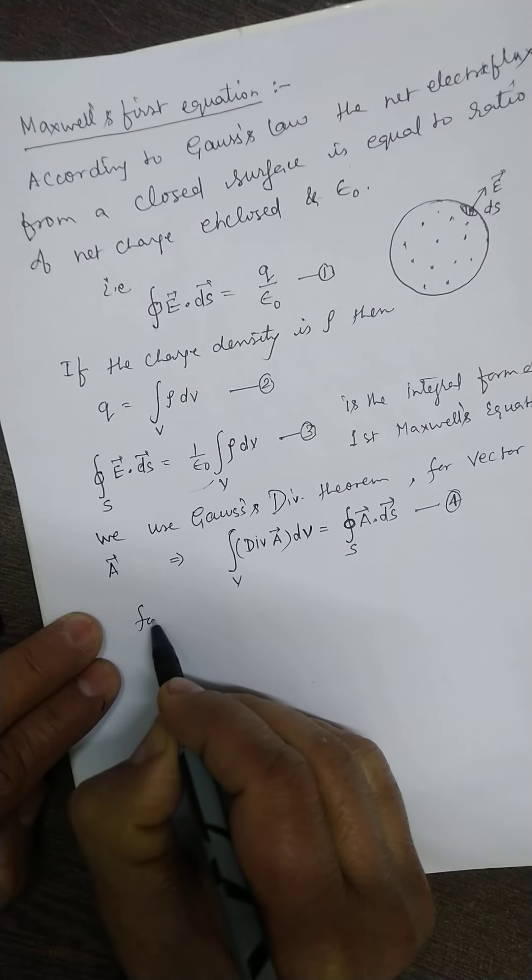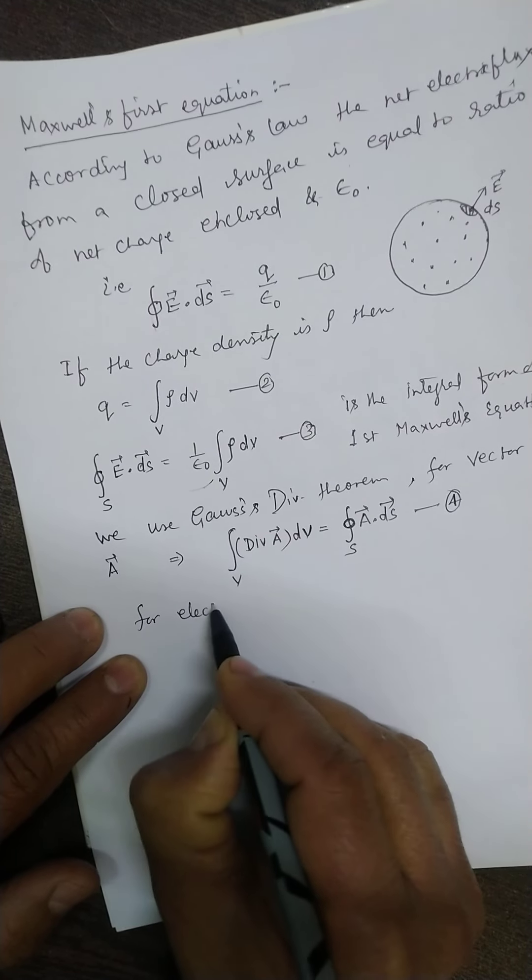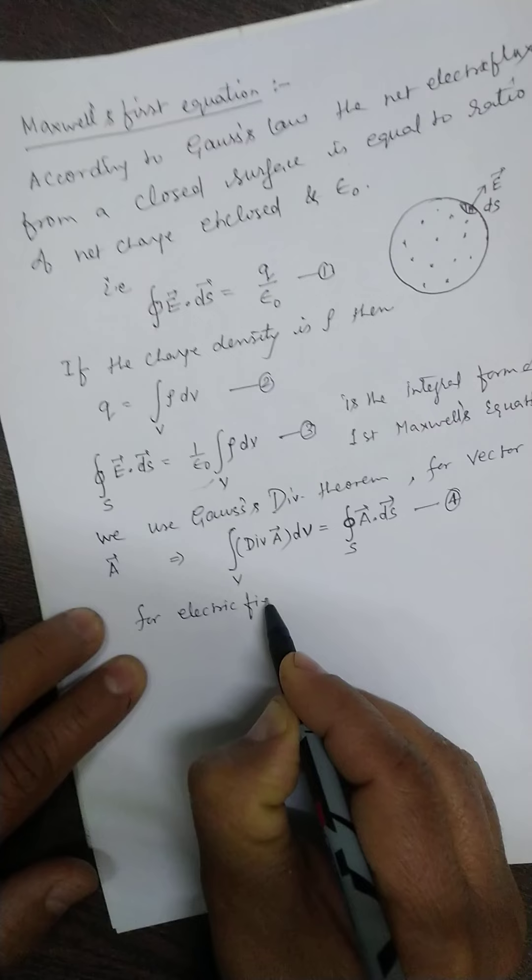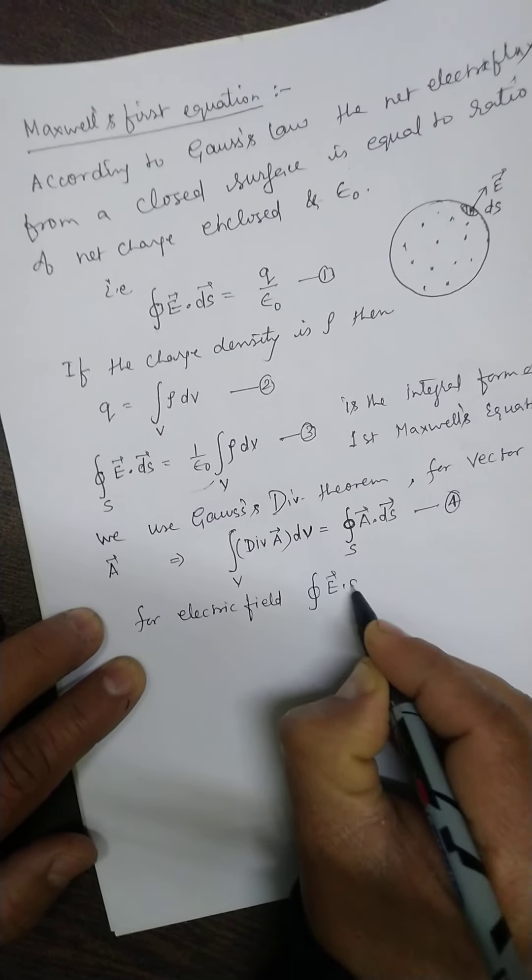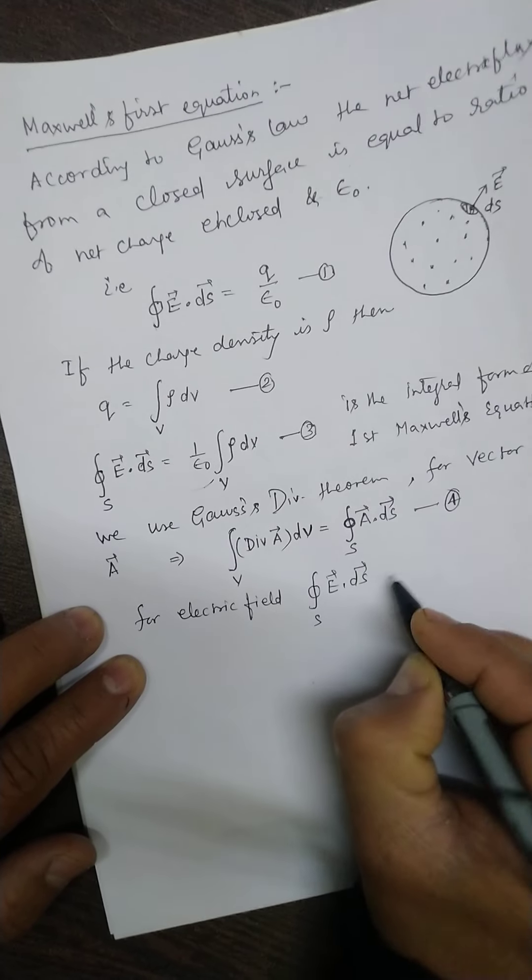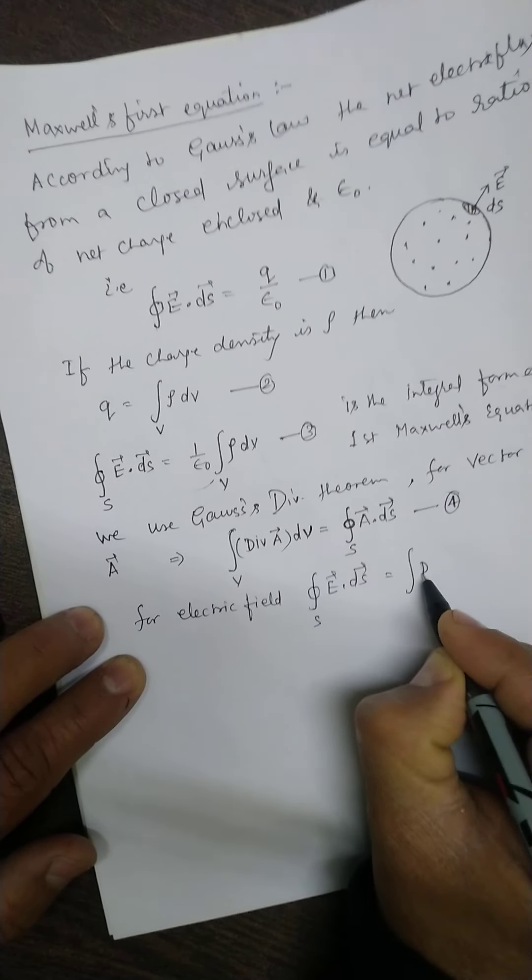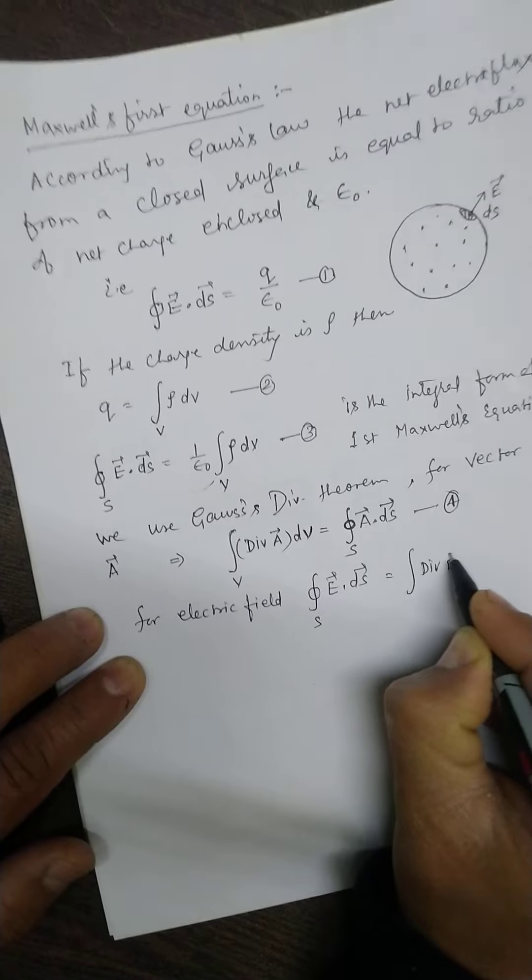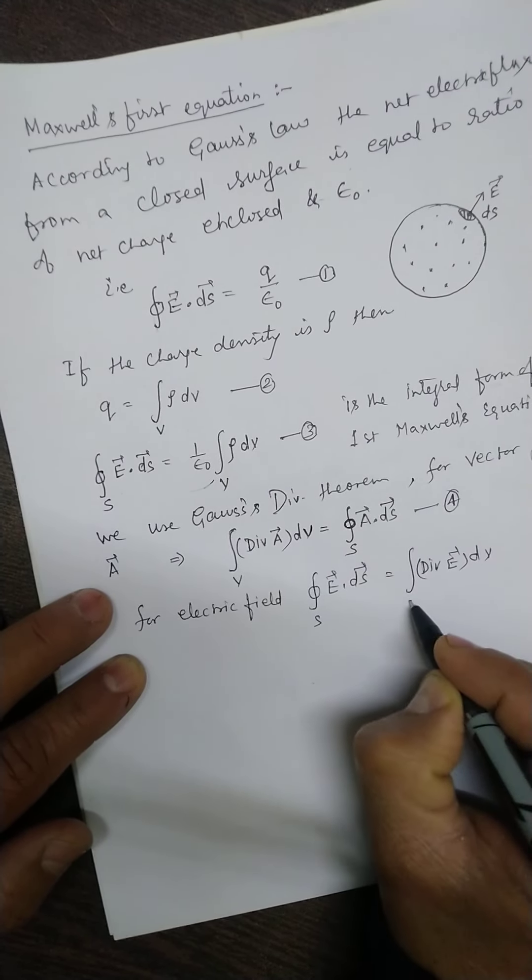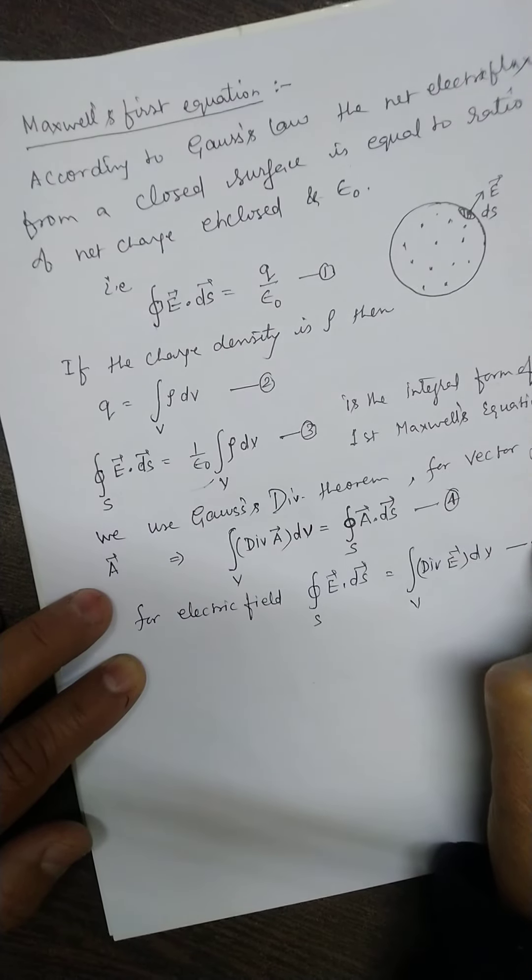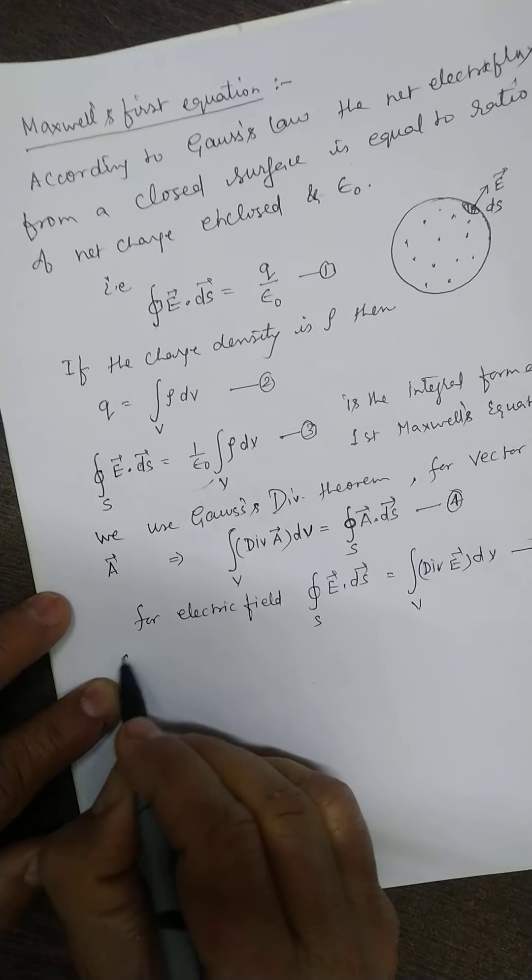For electric field, I can rewrite this equation. Integration E dot ds over the whole surface will be equal to divergence of E dV. Equate equation third and fifth.